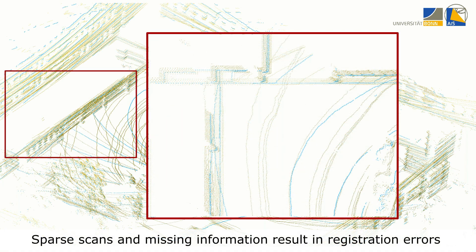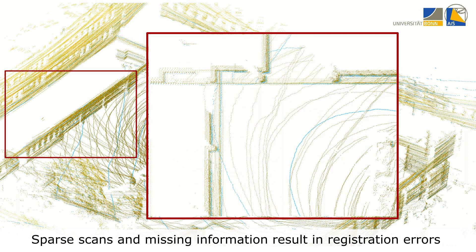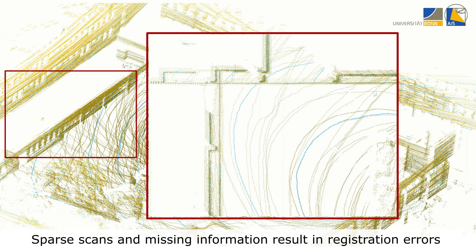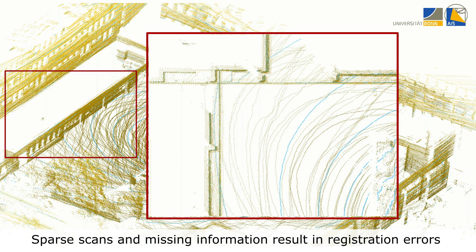Inaccuracies, for example caused by wrong data associations, missing information, or the sparseness in distribution of measurements, lead to misalignments and degeneration in the map and require costly reprocessing of the sensor data.